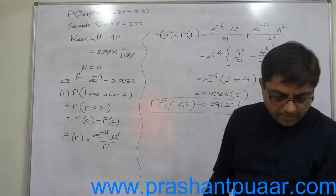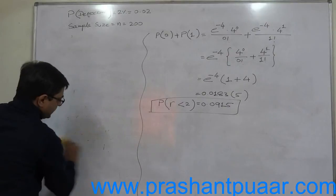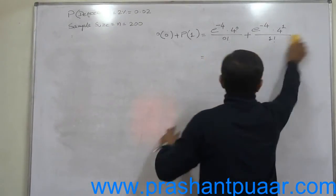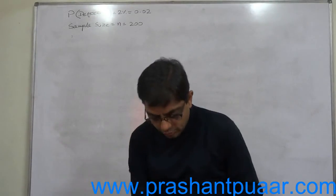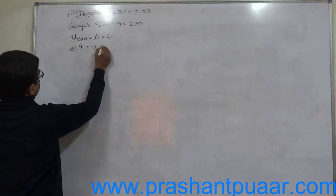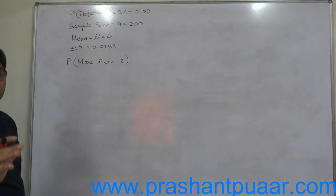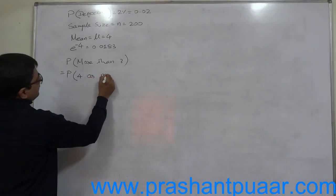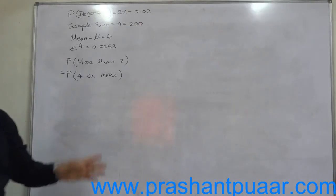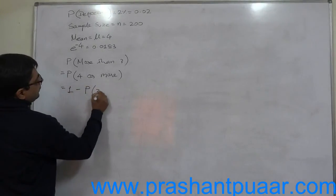The second sub-question asks for the probability of getting more than 3 defective bulbs out of 200. Since the sample size and defect probability remain the same, the mean is still 4. Probability of more than 3 means r = 4 or more, going up to 200, which is not feasible to calculate directly. So we use the complement: P(r > 3) = 1 minus P(r ≤ 3).